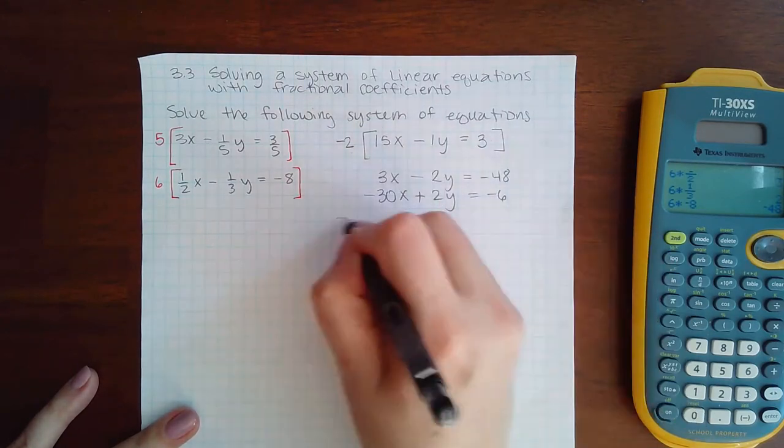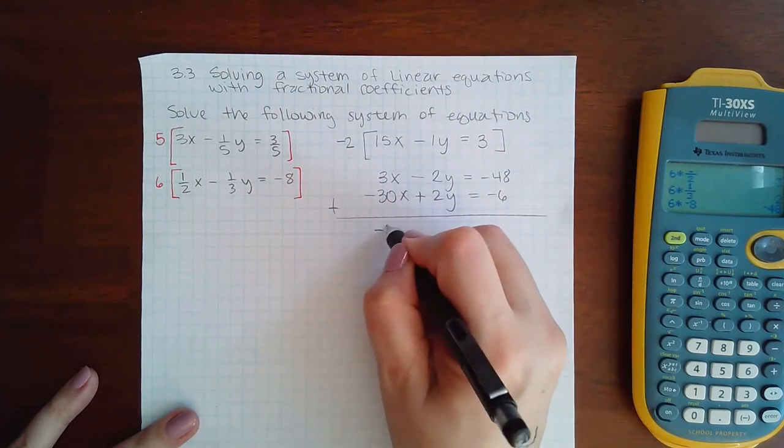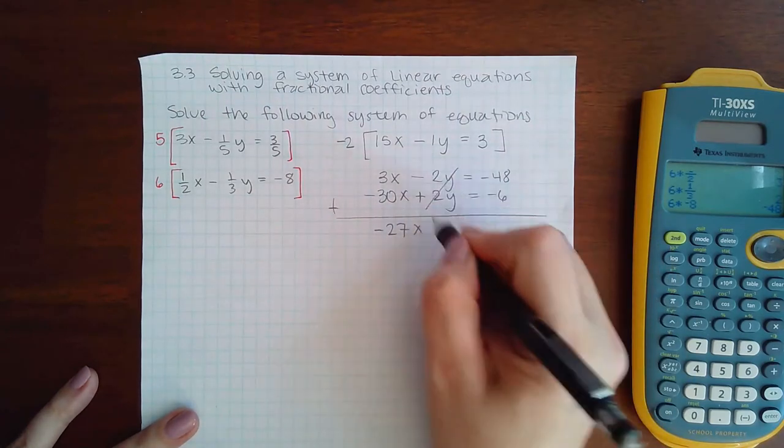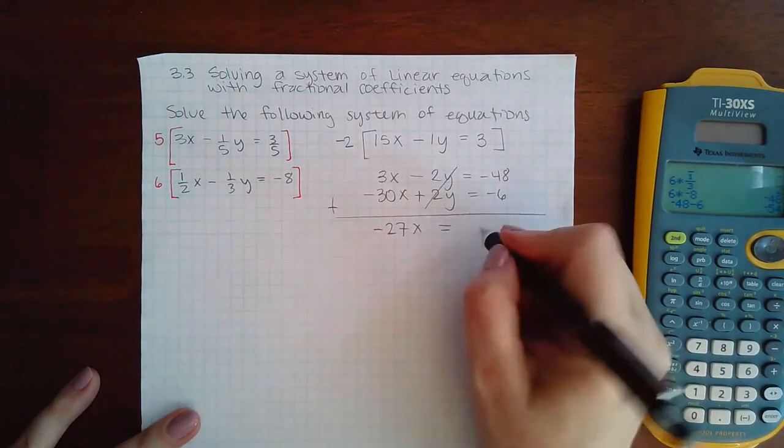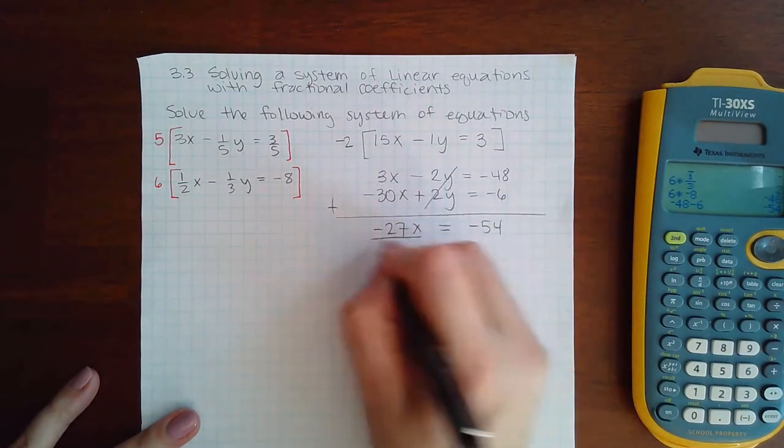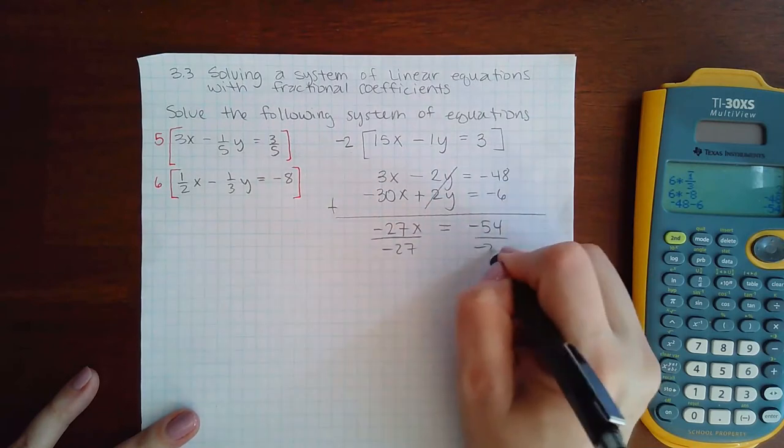When I add these together, I get negative 27x. Those wipe out, and then negative 48 minus 6 is negative 54. If I divide by negative 27 on both sides, I get that x is a positive 2.